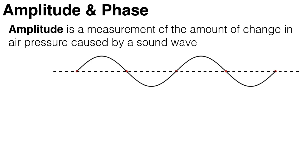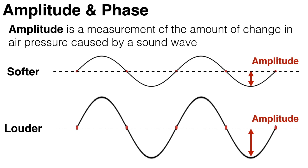Amplitude is a measurement of the amount of change in air pressure caused by a sound wave. It's a measure of the distance between the middle of the wave and the maximum or minimum of that wave, and it's measured in meters. All other things being equal, if you increase the amplitude of a sound wave, you increase the volume of the sound or note.